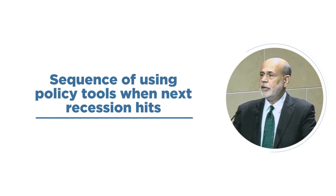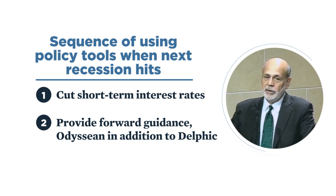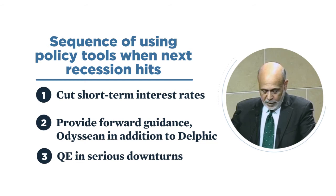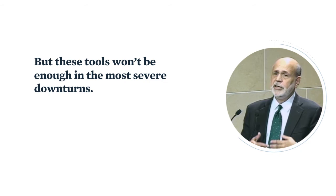On the tools issue, I'm pretty much on board with the sequencing Janet Yellen has talked about: when the next recession comes, the first line of defense will be to cut short-term interest rates; forward guidance will come into play very quickly; and only if it's a relatively serious downturn, and if we can't get any help from the fiscal authorities, will QE come into play. That said, I think I might disagree in arguing this will be enough in all circumstances — it clearly won't be enough in the most severe downturn.